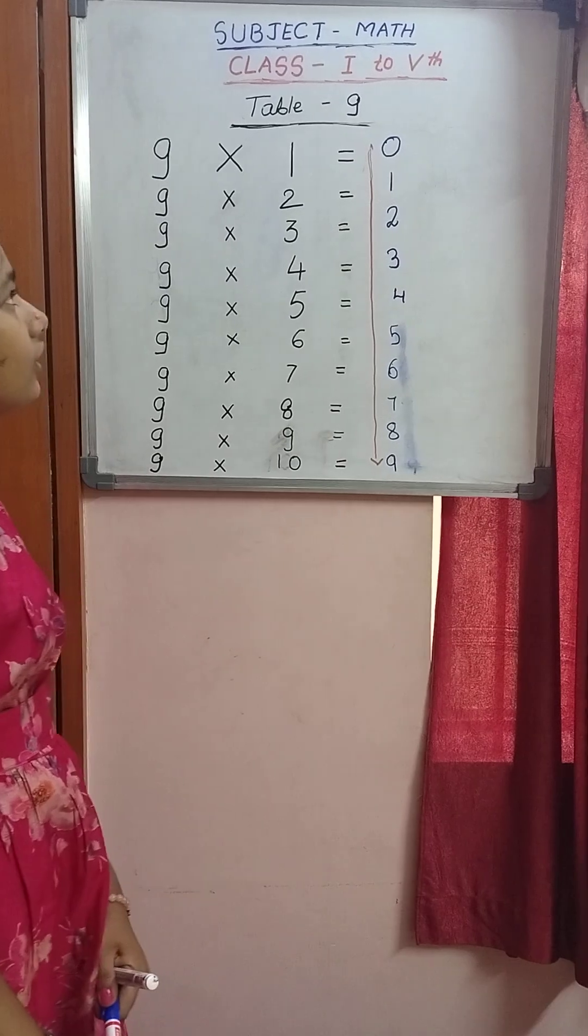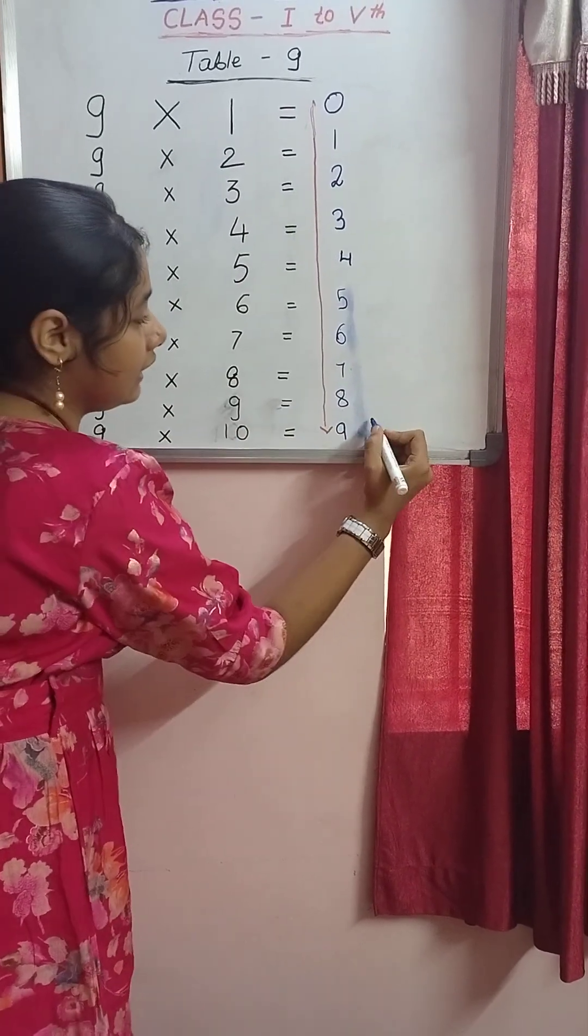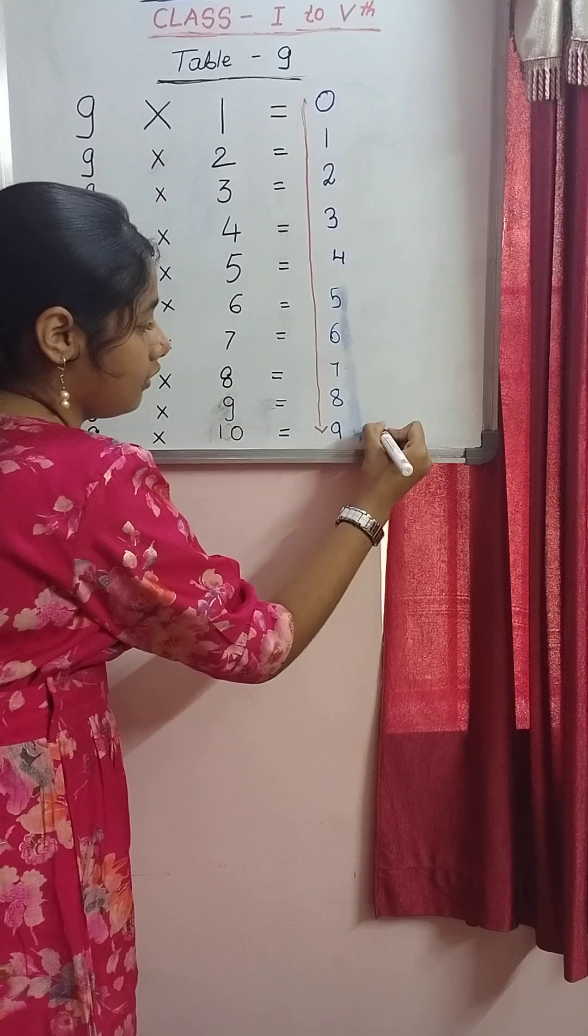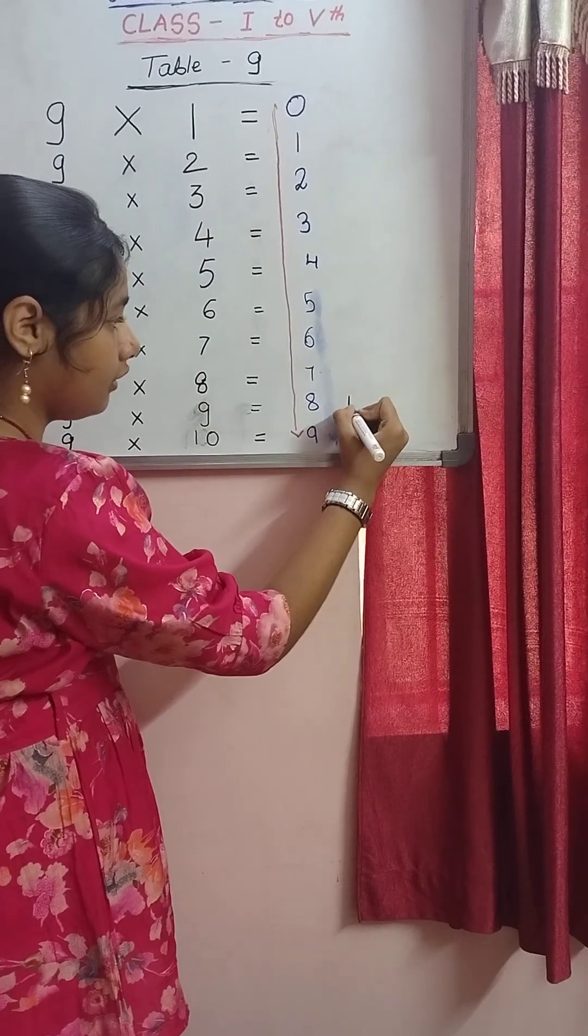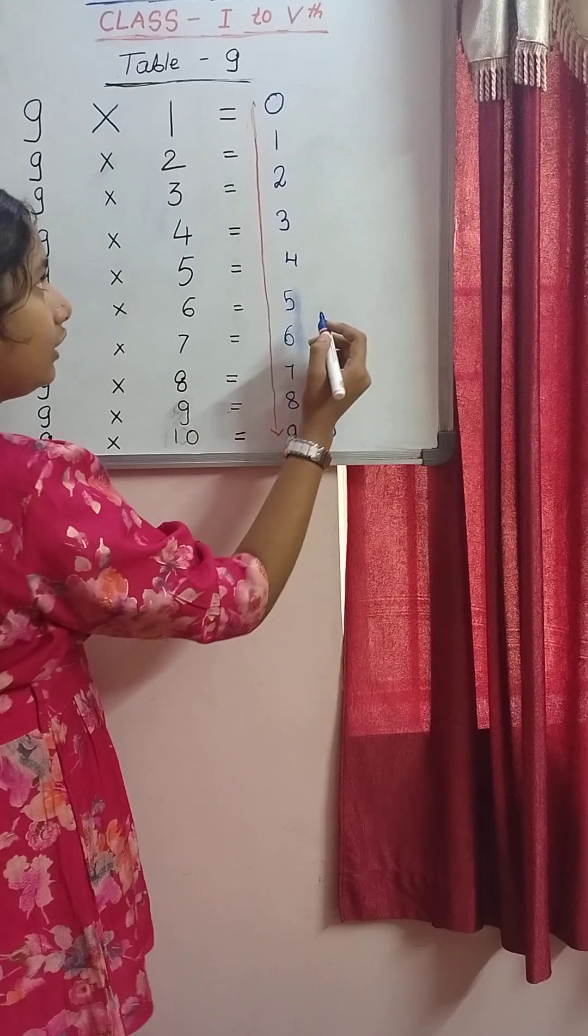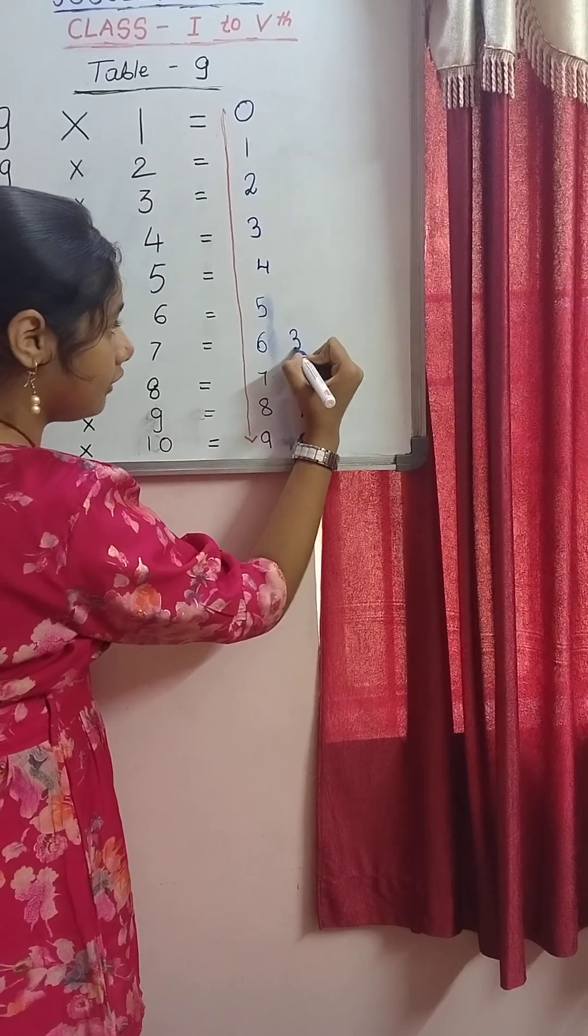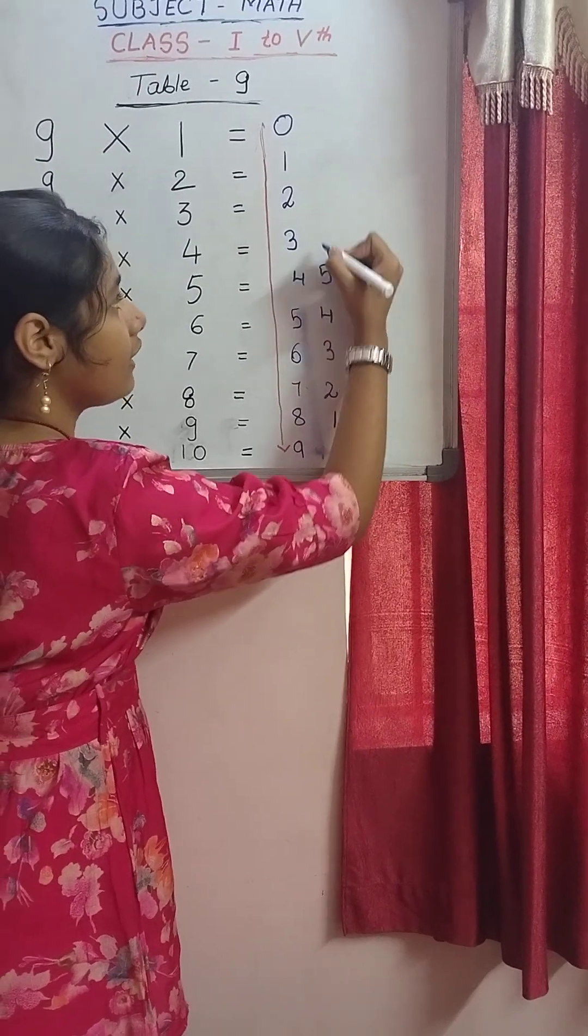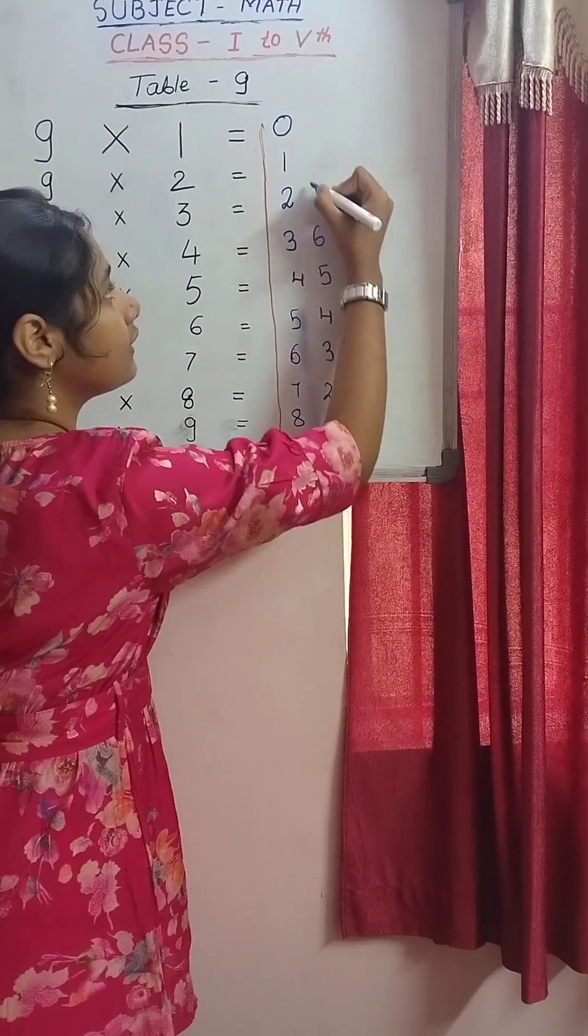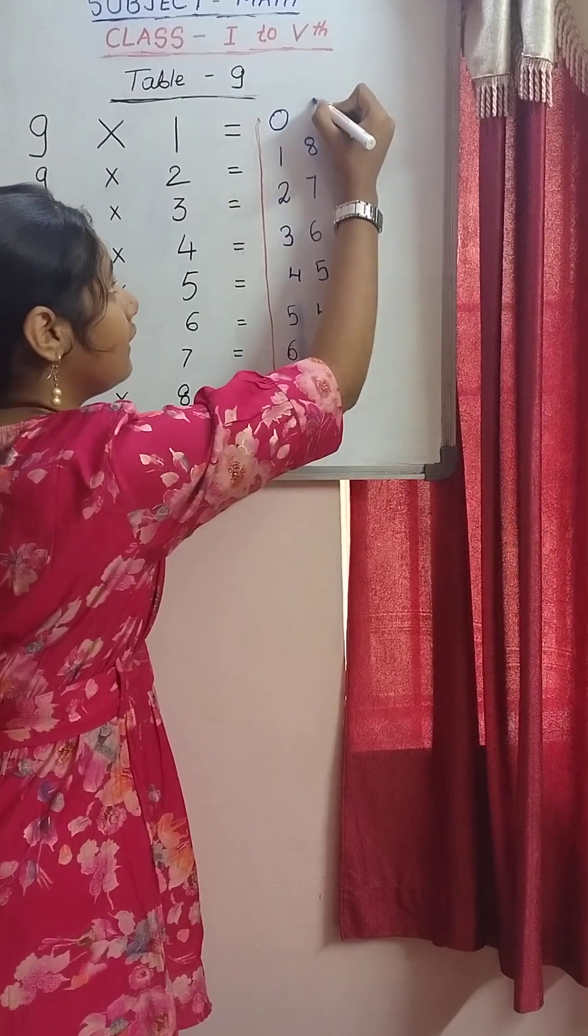So now again we are going to start. We are going to get this zero at the bottom. So let's write zero over here. We are going to get this one here and the same thing continues. So we get the 2 here, the 3 here, the 4, 5, 6, 7, 8 and 9.